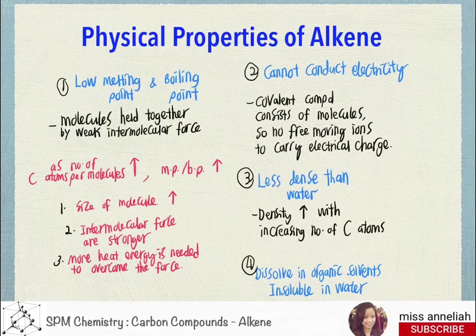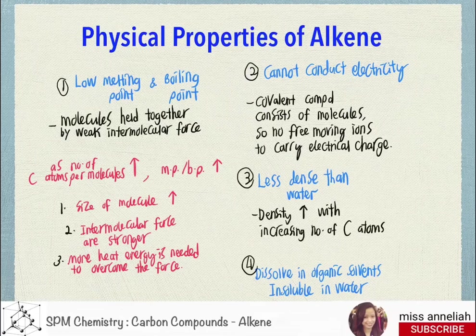Second, alkenes cannot conduct electricity because, as covalent compounds, they consist only of molecules with no free-moving ions to carry electrical charges. Third, alkenes are less dense than water, meaning they float on water; however, density increases with an increasing number of carbon atoms per molecule. Finally, alkenes can dissolve in organic solvents but are insoluble in water.